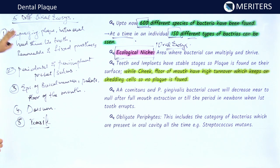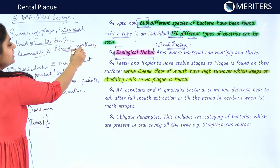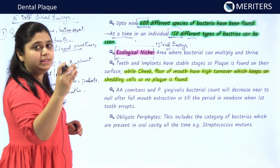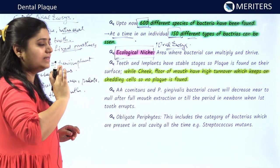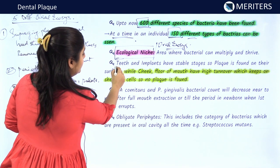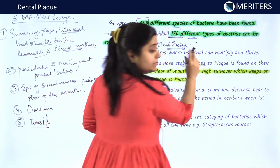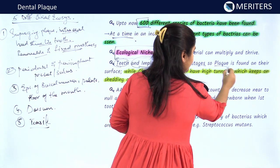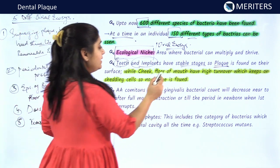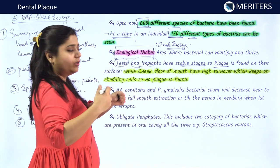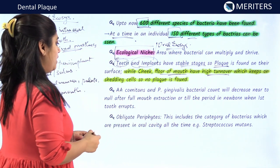Out of these five ecosystems, the intraoral hard structures like the tooth and removable and fixed prosthesis are non-shedding — their epithelium is not denuded, they are constant structures. So plaque can form over all these structures. Teeth and implants are stable stages that provide stable structures in the oral cavity over which plaque is found. The epithelium of the cheek, palate, and floor of the mouth keeps on turning over with a high turnover rate, so plaque cannot develop over these surfaces.